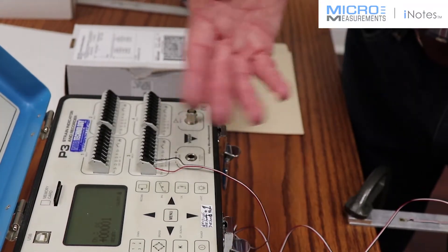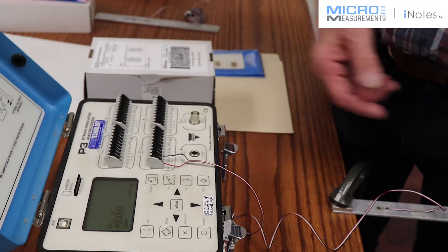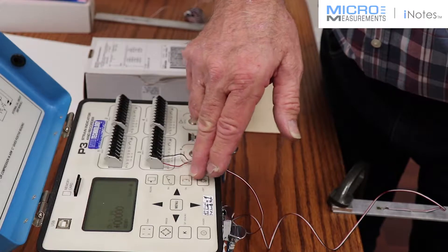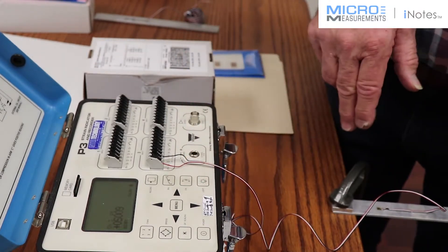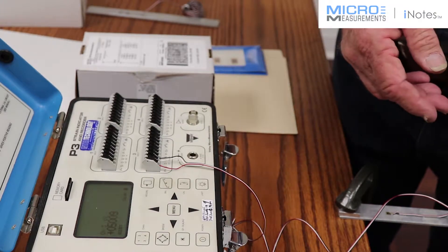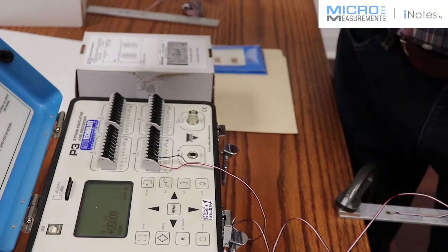We have the ability to check calibration before we start to take readings or record readings. So if I press the cal button, it should be giving me a 5000 micro strain readout for the gauge factor of two.